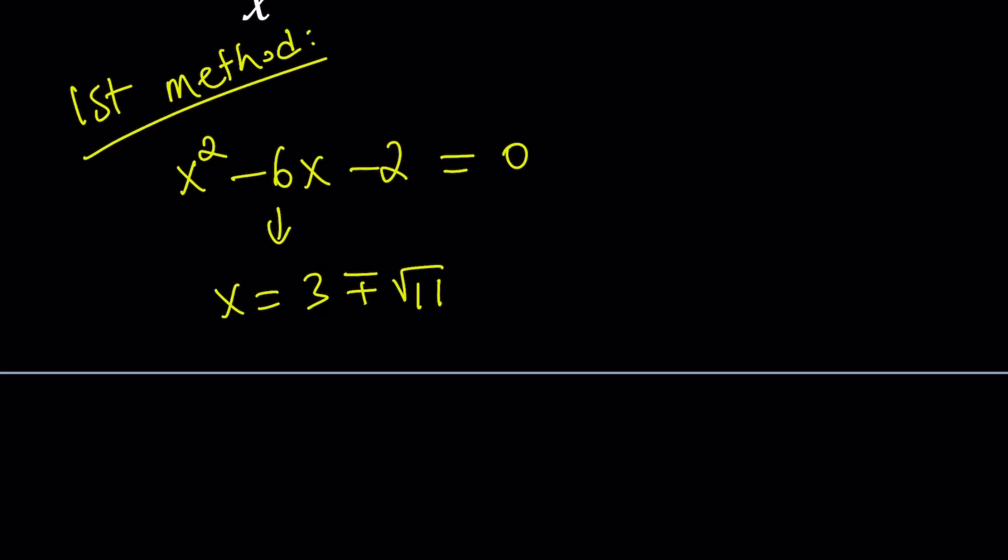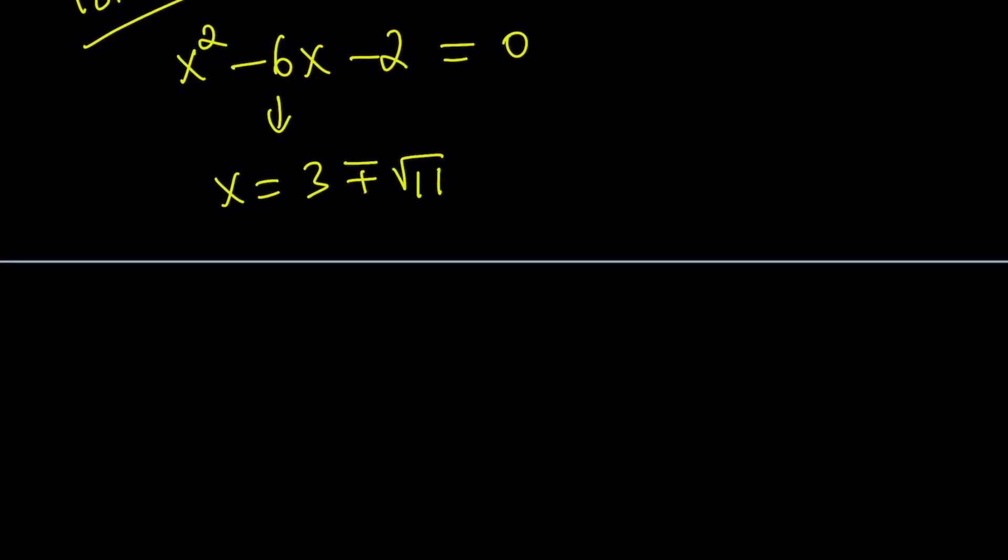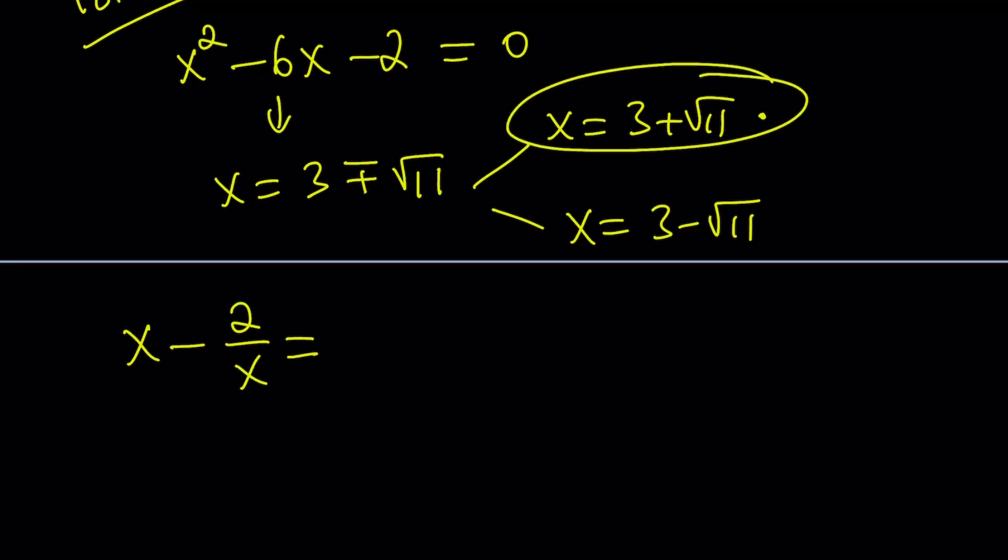Now we're going to go ahead and plug it in, but there are two solutions: 3 plus root 11 and 3 minus root 11. Let's use the first one. So we're supposed to evaluate x minus 2 over x, replace x with 3 plus root 11.